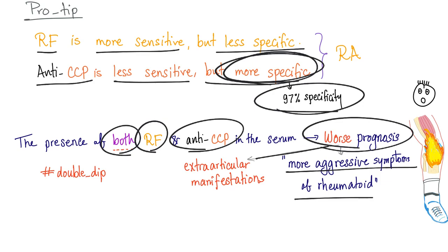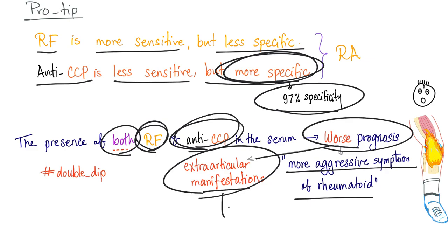If you have both anti-CCP and rheumatoid factor, you're more likely to develop extra-articular manifestations — symptoms outside the joint — such as inflammatory fibrosis of the lung, inflammation of the sclera, mucosal inflammation, rheumatoid nodules, and more.